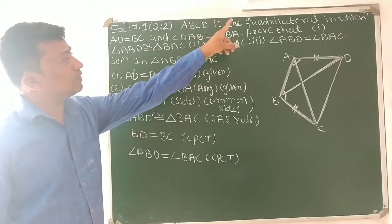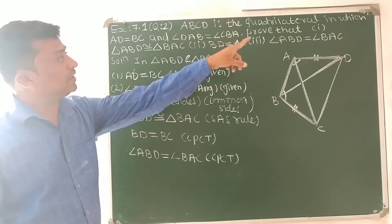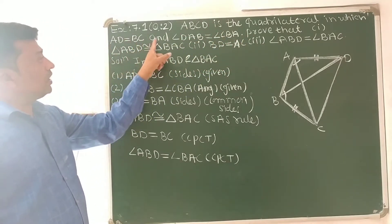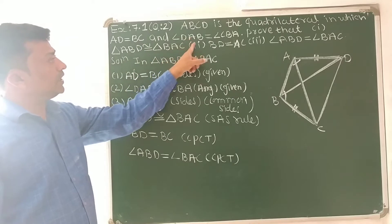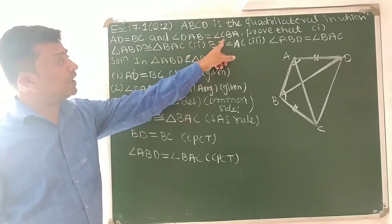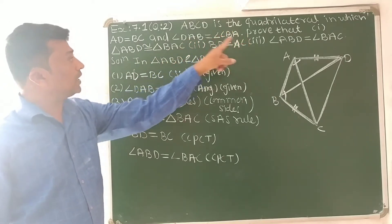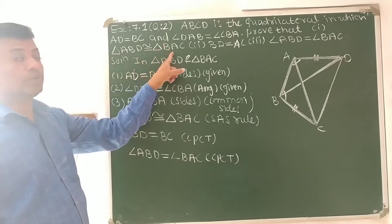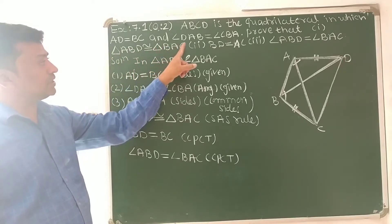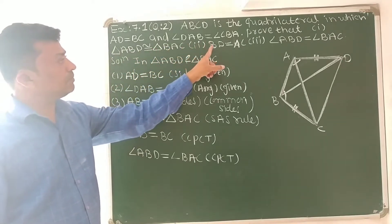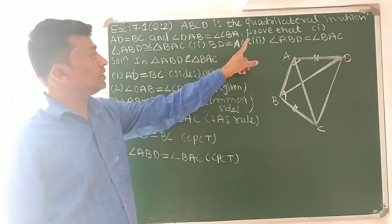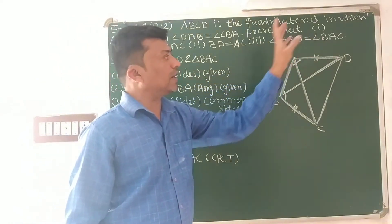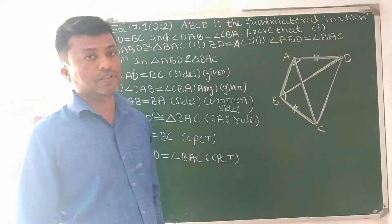ABCD is a quadrilateral in which AD is equal to BC and angle DAB is equal to angle CBA. Prove that: first, triangle ABD is congruent to triangle BAC; second, BD is equal to AC; third, angle ABD is equal to angle BAC.